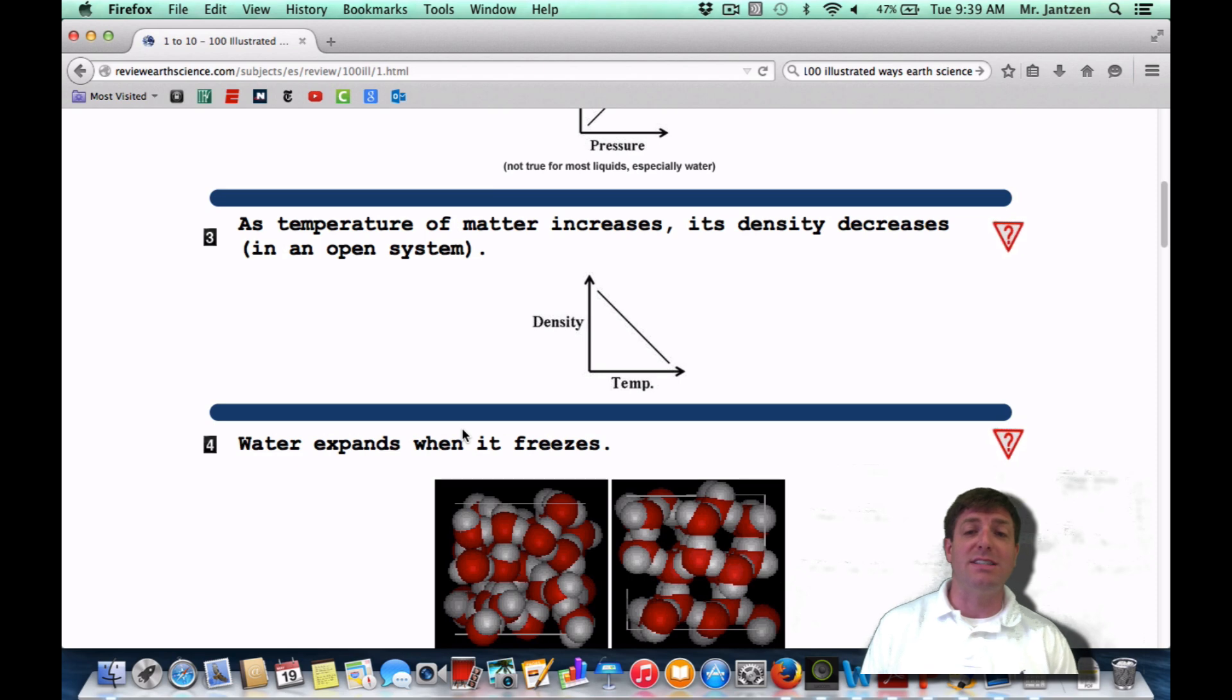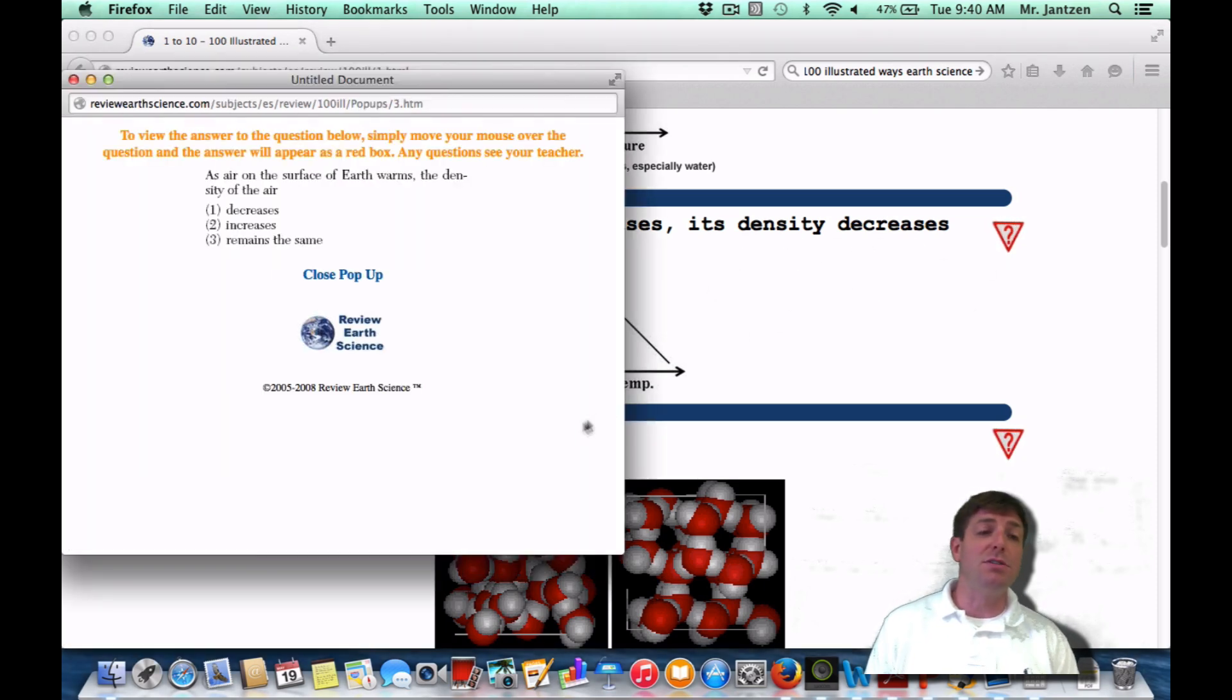Number three, as temperature of the matter increases, its density decreases. So as you increase the temperature, that means the molecules are going to start going a little crazy. They're going to start bouncing off one another. They're spreading out. So if they're spreading out, that means the density is actually going to drop because the molecules aren't as confined in such a small space.